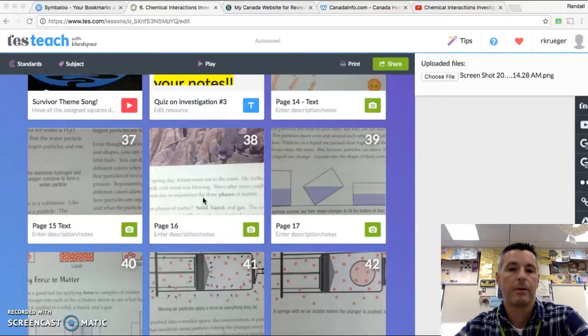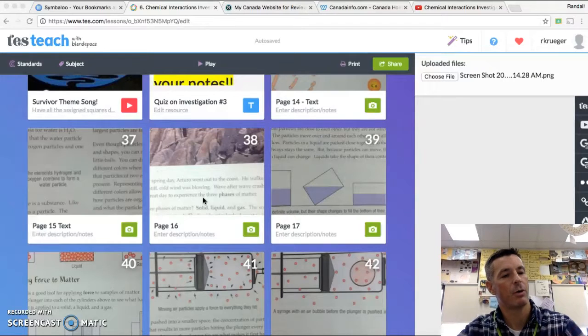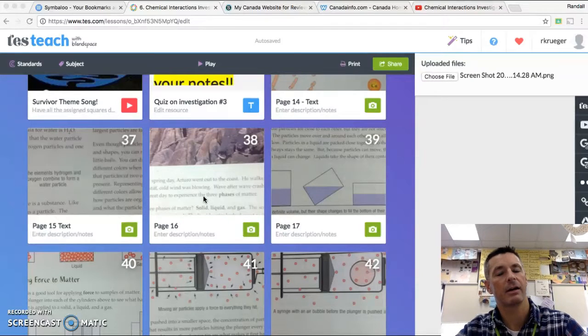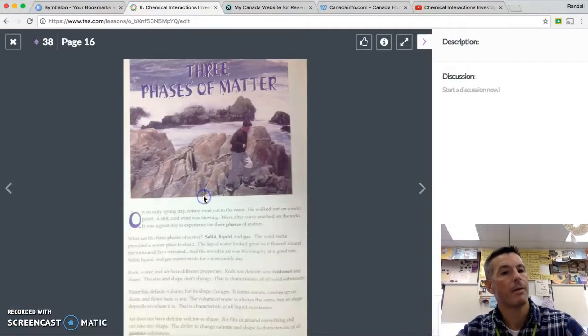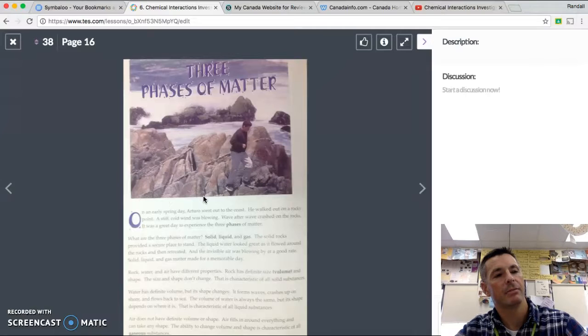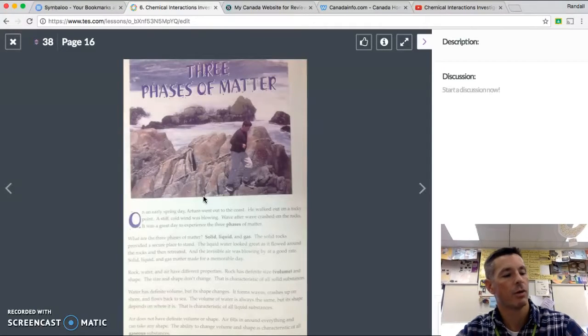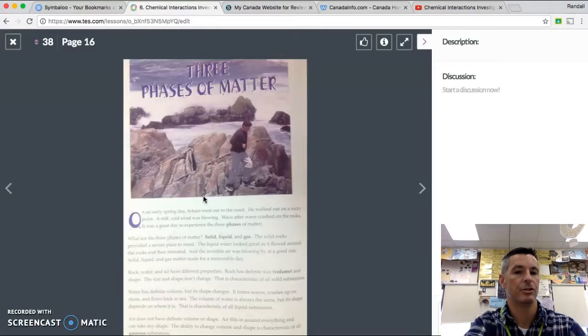So without further ado, let's first read the questions that we're looking for in the text. Three phases of matter questions. Question number one: what crumples a plastic bubble in a syringe when you apply force to the plunger?